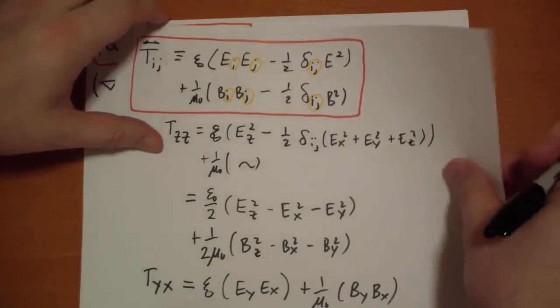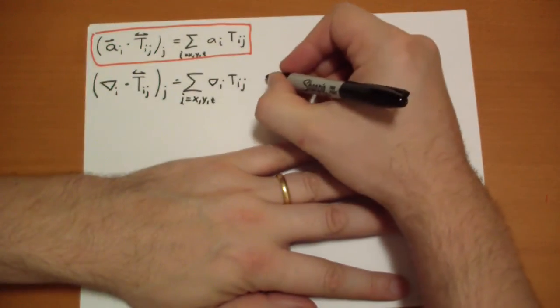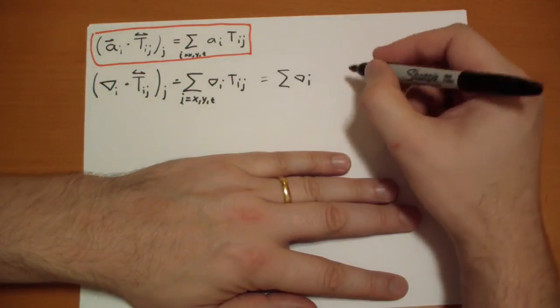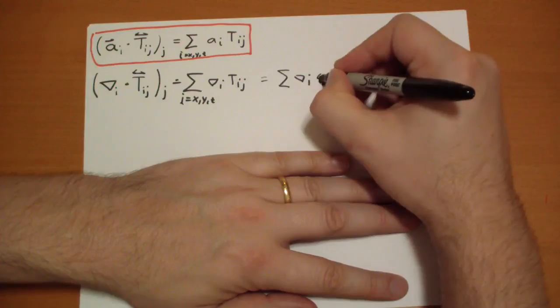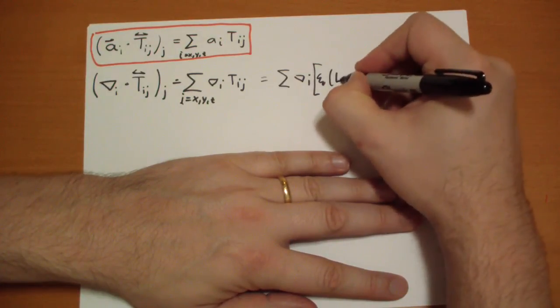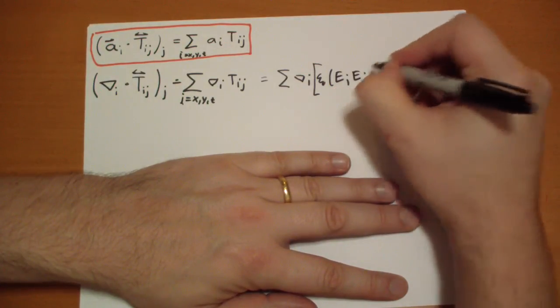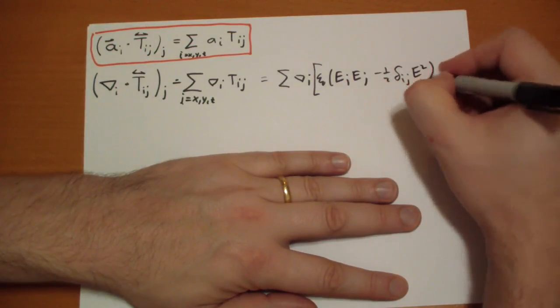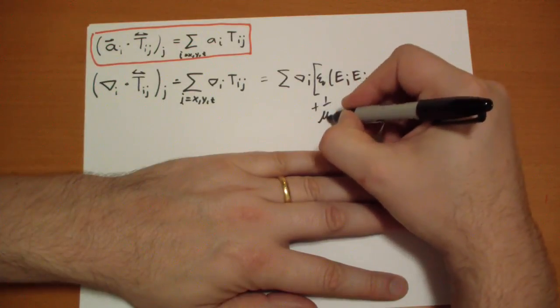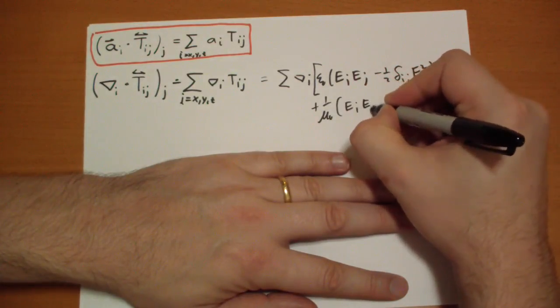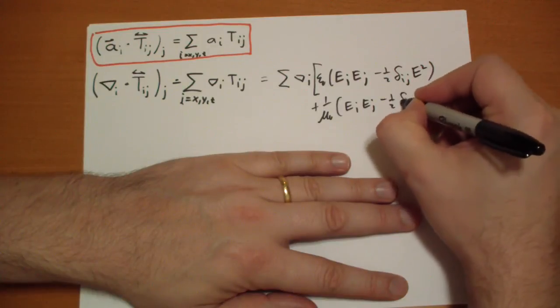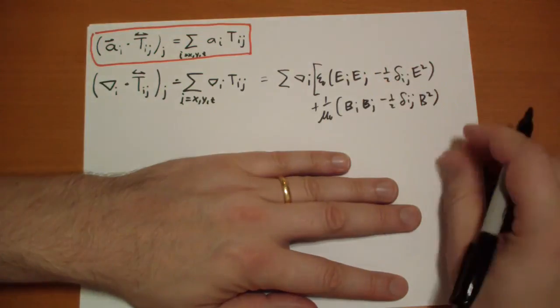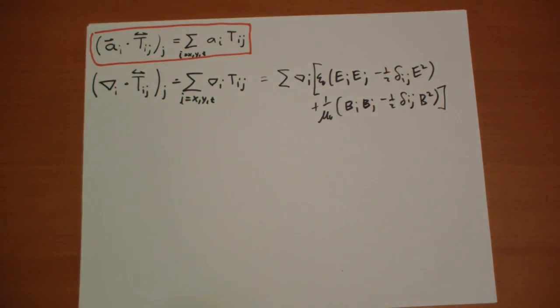Let's actually do that. So our tensor definition is right here. Let's apply this operation. So this is going to be equal to the sum of del i of epsilon-naught e i e j minus one-half e squared, plus one over mu-naught b i b j minus one over half b squared. And I screwed up, these are b's not e's. There you go, there's the answer.